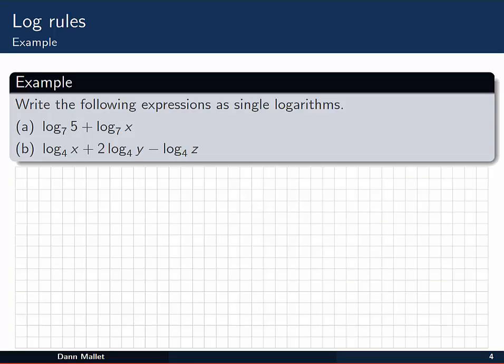In the next example, we are going to write these expressions as single logarithms. At the moment, they are the sum of the logarithms and a sum and difference of 3 logarithms. So in A we are asked to combine two logs with base 7. That's important first of all that they have the same base. And they are combined by addition.